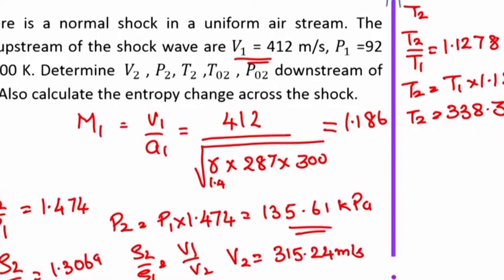Now, what is T02? T02 is stagnation temperature. It is an adiabatic flow. Stagnation temperature will remain constant across the shock. T02 is equal to T01 and for T01, T1 is given 300 Kelvin and you know M1. Now here you have to use the isentropic table or the isentropic relations. Be very careful here: 1 plus gamma minus 1 by 2 M1 square.